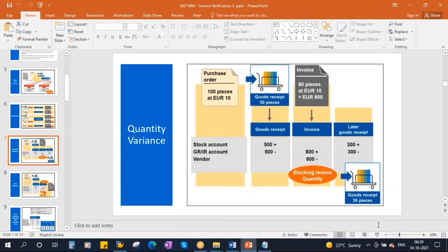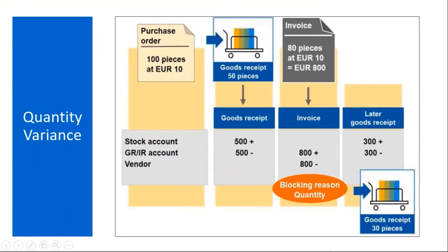First we'll start with the quantity variance. You have a purchase order for 100 pieces at 10 Euro per piece. The vendor delivered 50 pieces, goods receipt done for 50, but he sends the invoice for 80 pieces. Then the system will block the invoice and the blocking reason will be 'quantity.' Now we will see this in the system.